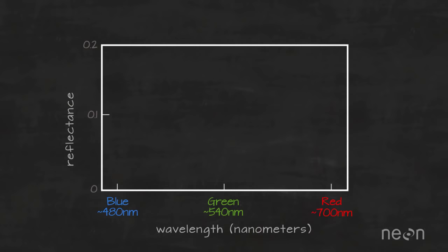We can plot the amount of red, green, and blue light recorded in each pixel to create what's called a spectral signature. In this signature, the amount of energy reflected in a particular wavelength is shown on the y-axis, and the full range of wavelengths that were measured by the camera, in this case blue, green, and red, is on the x-axis.